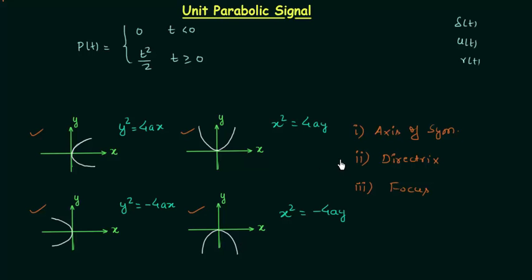Now we will talk about directrix and focus. The directrix is a straight line and the focus is a point. I will represent the directrix by capital D and the focus by capital F. Now, if you take any point on the parabola, it will have the same distance from the directrix as from the focus. For example, if this is point P, then the distance of point P from the focus is the same as its distance from the directrix.